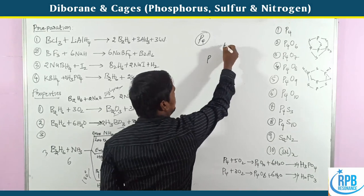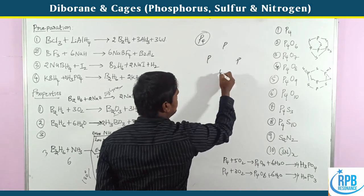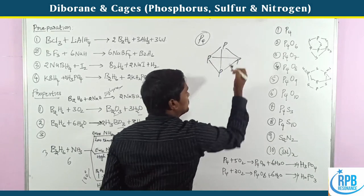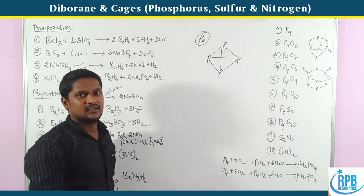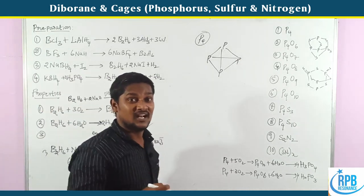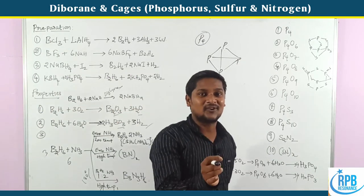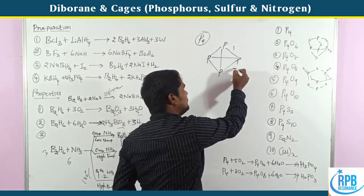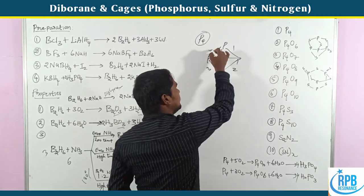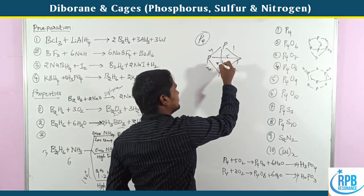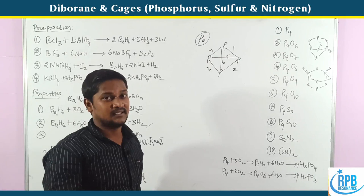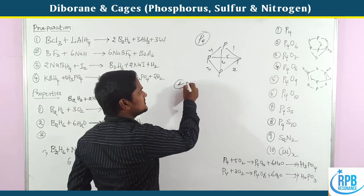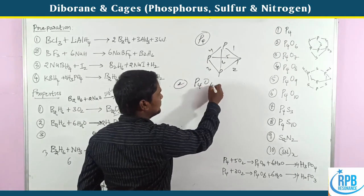Now let's look at the P4 structure. This is the P4 structure. How many P-P bonds are there? Counting: 1, 2, 3, 4, 5, 6 — six P-P bonds are there. This is the first question. Now the second question: P4O6.